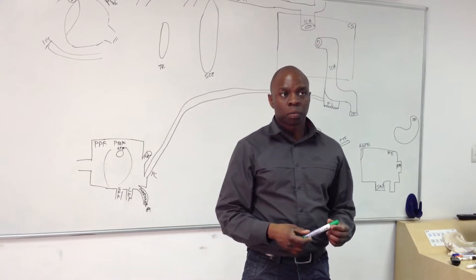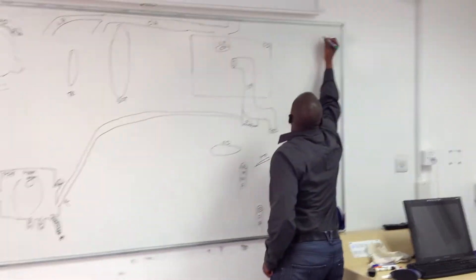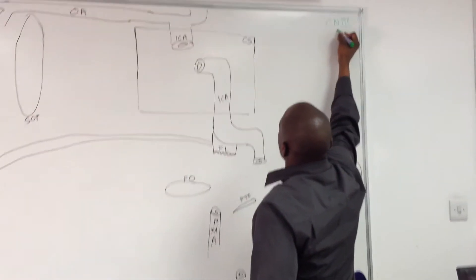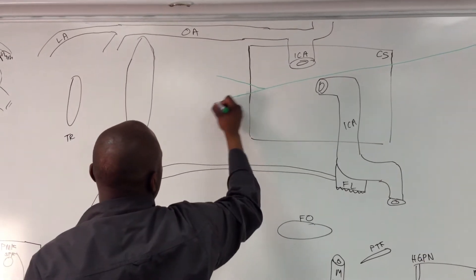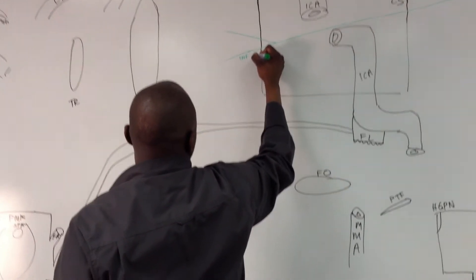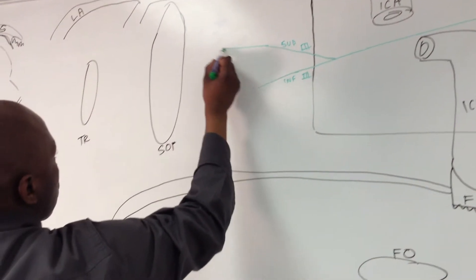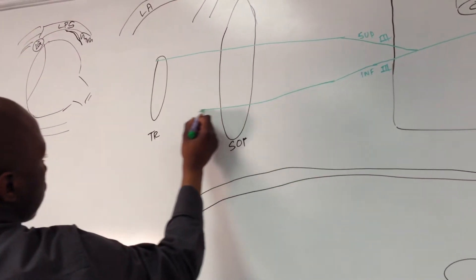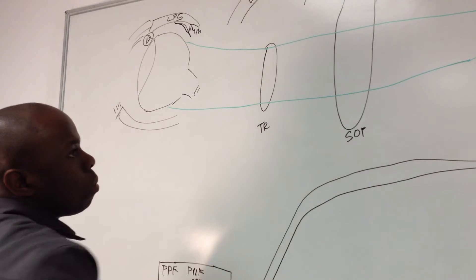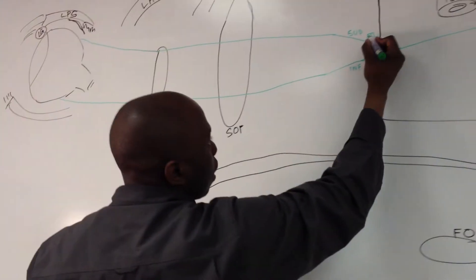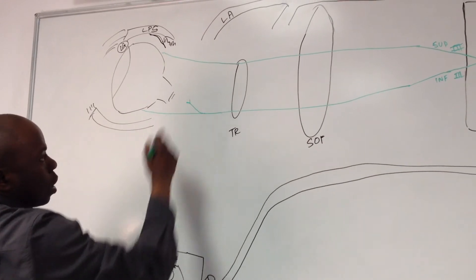We're going to start off with cranial nerve number 3, which is the oculomotor, drawn in this green pen. CN3 starts over here, goes through the cavernous sinus, and splits into two towards the end of the cavernous sinus — it has an inferior branch and a superior branch. Both are going to go through the superior orbital fissure and through the tendinous ring because they're working their way to the eye to work the extraocular muscles for eye movement. And it has a little contribution which we'll explain a bit later.